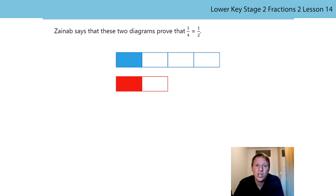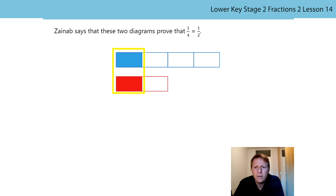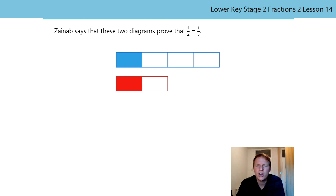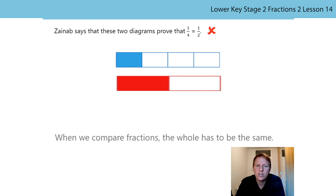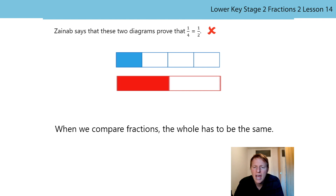Zainab thinks she has drawn two diagrams that prove a quarter is actually equal in size to a half. I can see what she means because the blue part — which is a quarter — is equal in size to the red part — which is a half. But what do we say needs to be the same when we compare fractions? The size of the whole needs to be the same, and our two wholes are not the same size. When I change this diagram so the wholes are the same size, is a quarter still equal to a half? No. A quarter is less than a half.